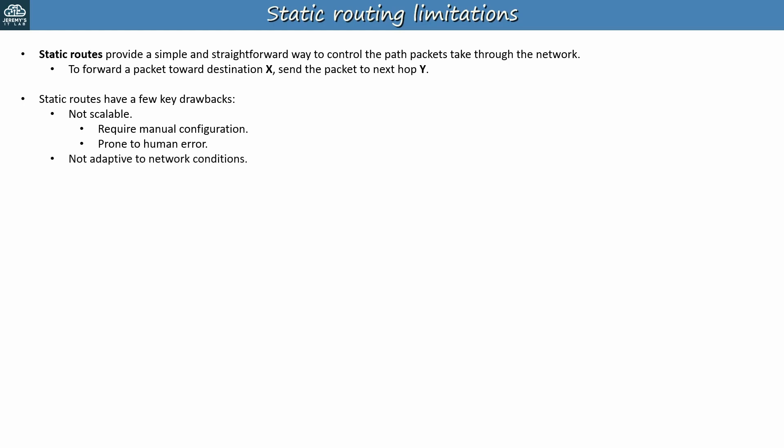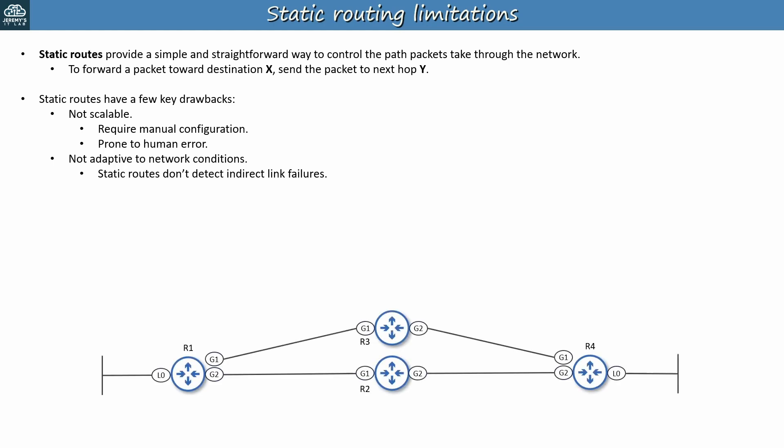But perhaps the even bigger drawback is that static routes aren't adaptive to network conditions, because static routes don't detect indirect link failures on their own. To show what I mean, let's use this simple network. For R1 on the left to reach R4's loopback network on the right, it has two paths: via R2 and R3. So let's say it has two static routes — one via R3 with the default AD of 1, and a floating static route via R2 with an AD of 2, acting as a backup. In normal conditions, R1 will send packets to R4 via R3 over this top path.